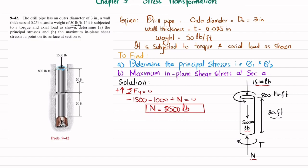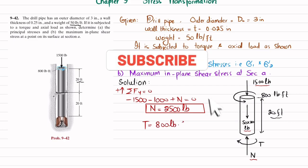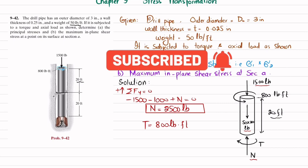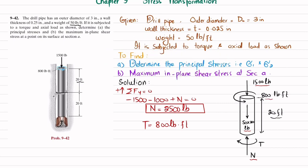Now we find the resultant reaction torque. Applying the moment equation: the applied torque is 800 pound-feet, and there is no other torque. The reaction torque T must balance it, so T equals 800 pound-feet in the clockwise direction (opposite to the applied counter-clockwise torque).